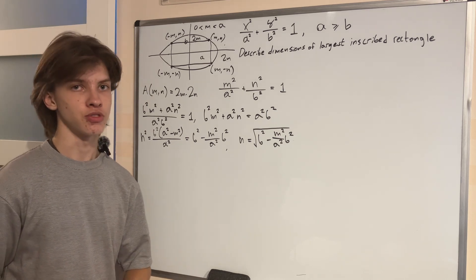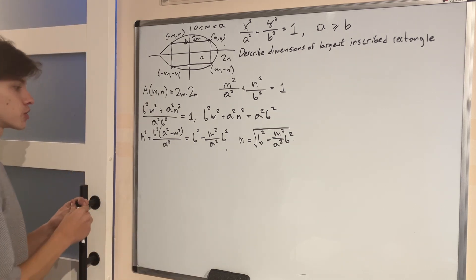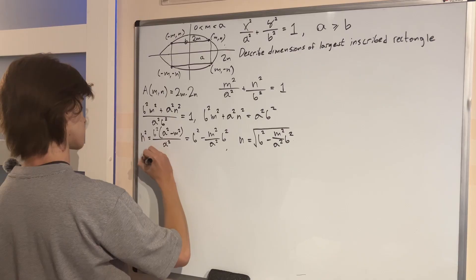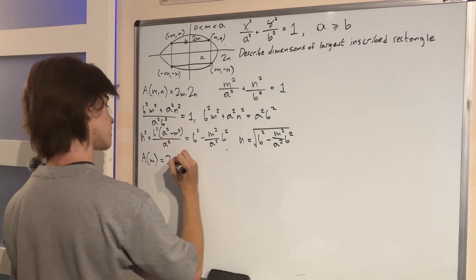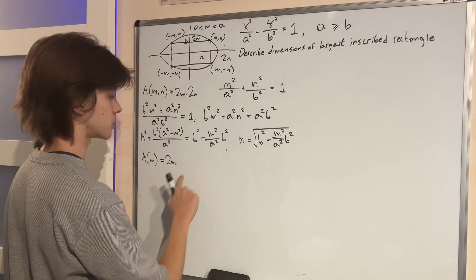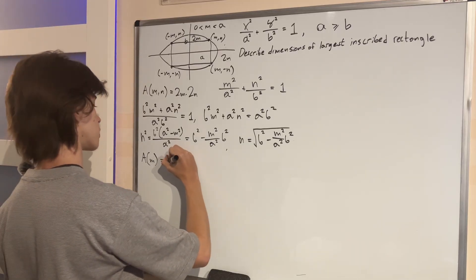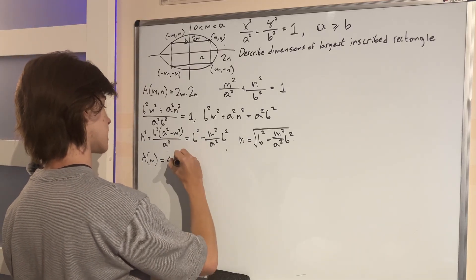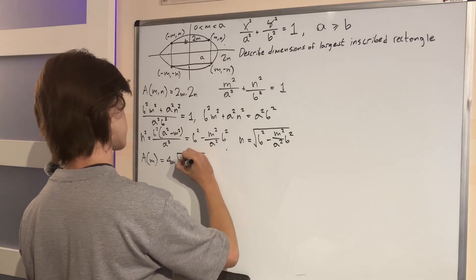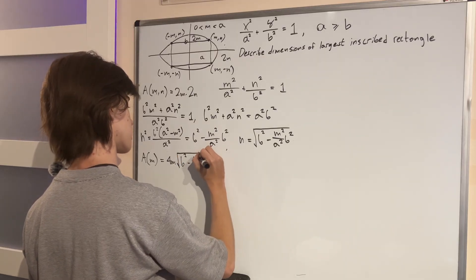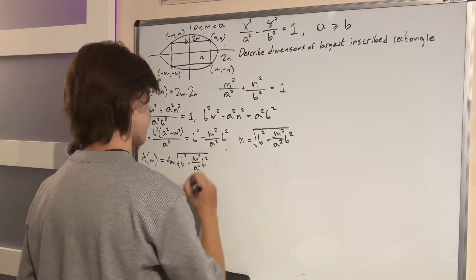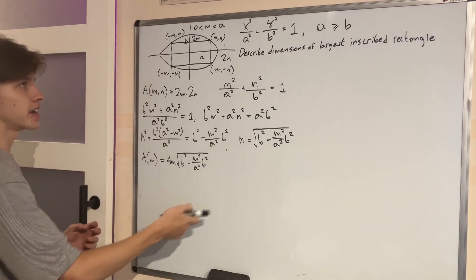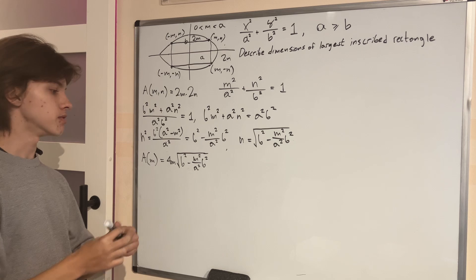And now we can finally substitute this N into our function in order to get an area function of just the variable M. And it is going to be 2M times twice this square root. So I'm going to just multiply the 2s, get 4M, and then times this square root we had, B squared minus M squared over A squared times B squared. And this is totally fine. We have B and A. They are just the constants. They are the axes of the ellipse. So now we can proceed with the maximization problem.